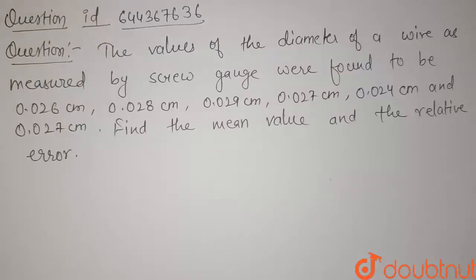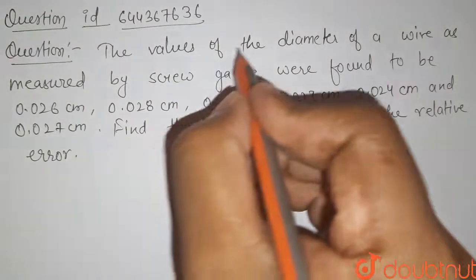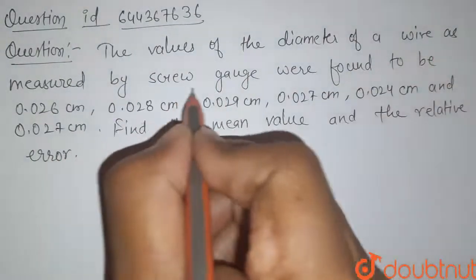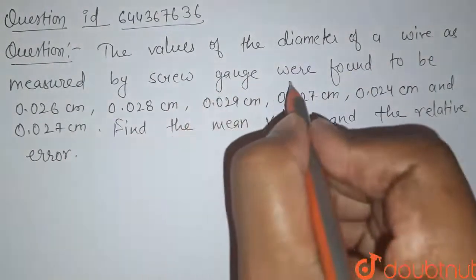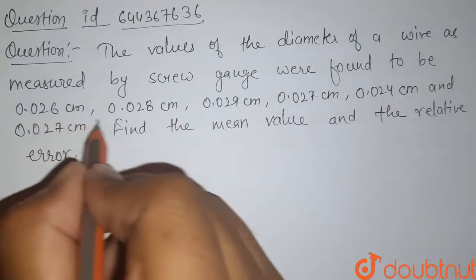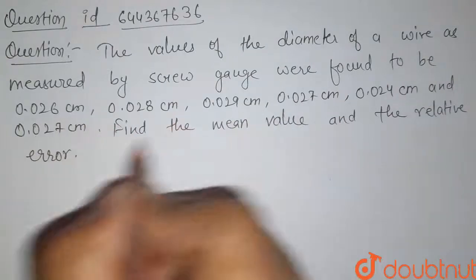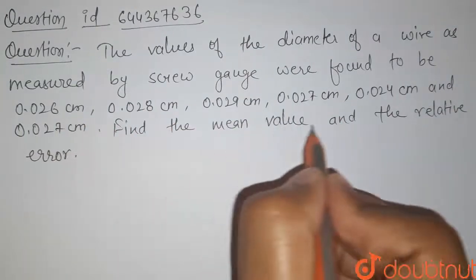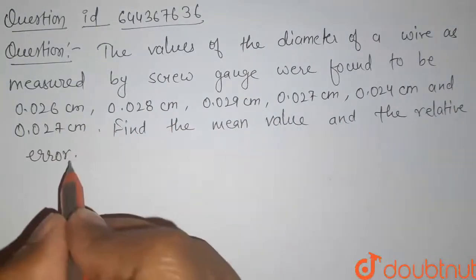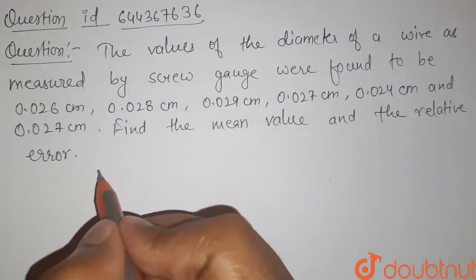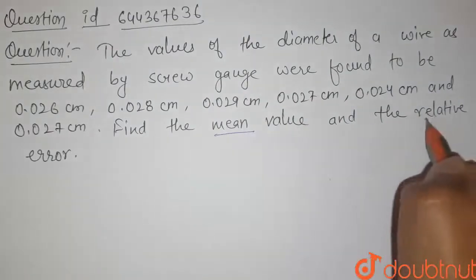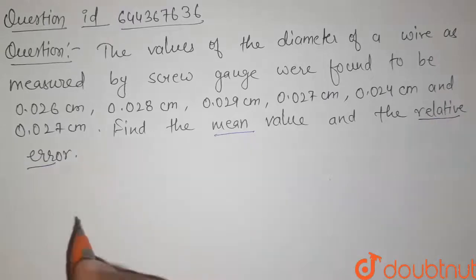Hello students, here is our question. The values of the diameter of a wire as measured by screw gauge were found to be — these readings are given for diameter. We have to find the mean value and the relative error of these readings.